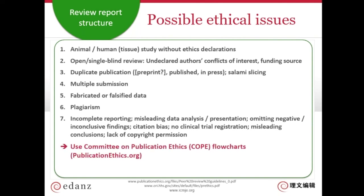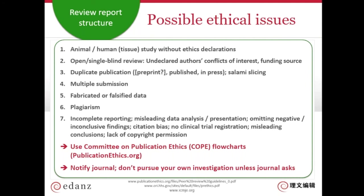COPE — the Committee on Publication Ethics — has flowcharts to help both editors and reviewers during peer review. Their website is publicationethics.org. Notify the journal if you suspect an ethical problem and don't pursue your own investigation unless the journal asks you to help. If you find a problem early on, don't write the whole peer review report — contact the journal office first, as it might save you time if the problem is major enough that the paper doesn't need peer review.